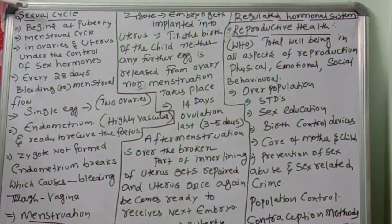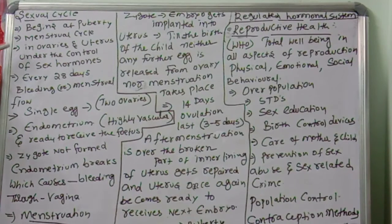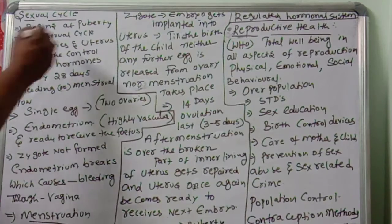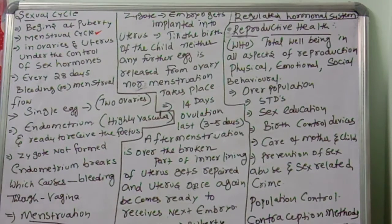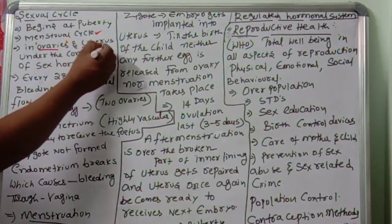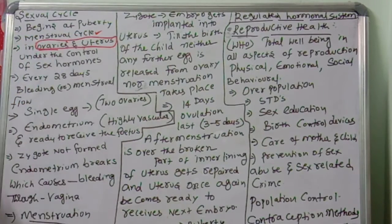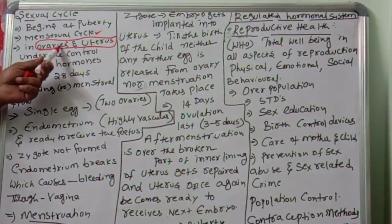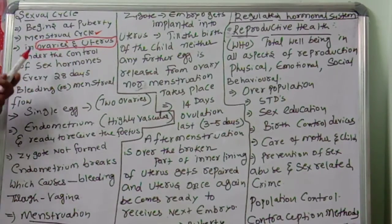In this class we are going to discuss the complete menstrual cycle in the human female. The sexual cycle begins when a girl attains puberty. This cycle is commonly known as the menstrual cycle. The events of this cycle occur in the female reproductive organs — specifically the ovaries and the uterus.